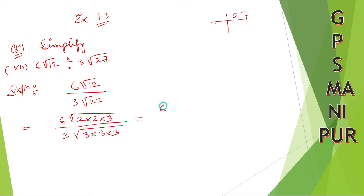So same thing here, 6, 2 times 2. It will be √(2² × 3) divided by 3√(3² × 3).